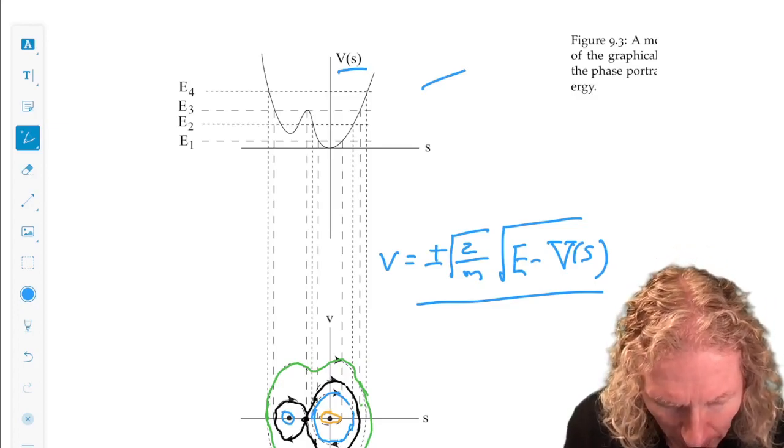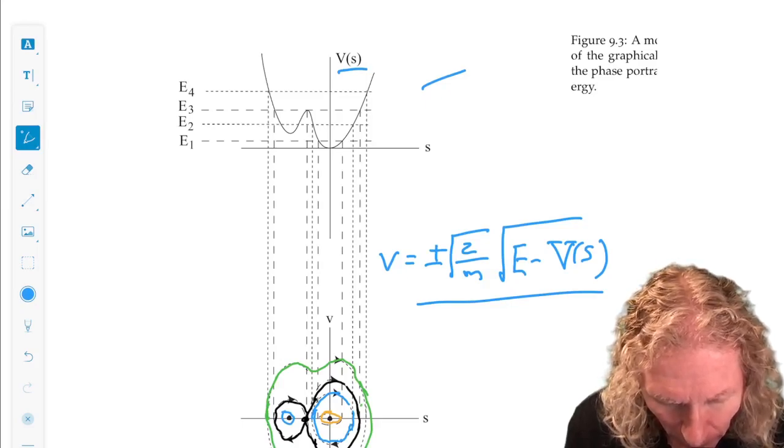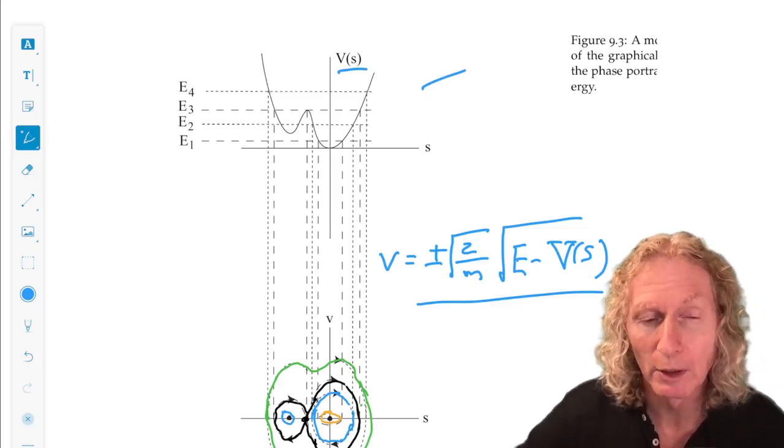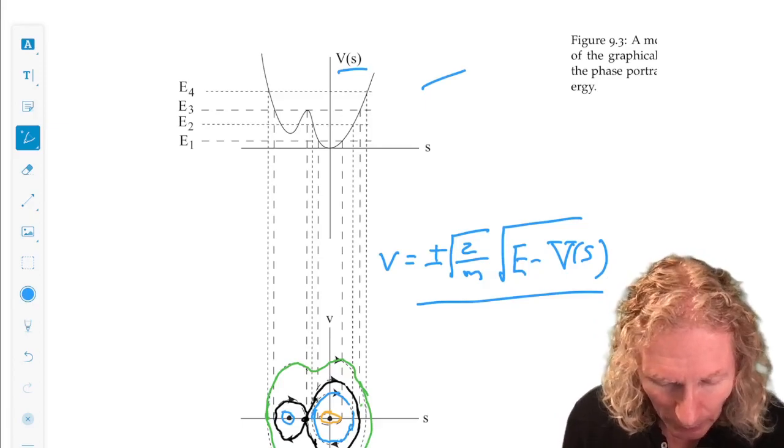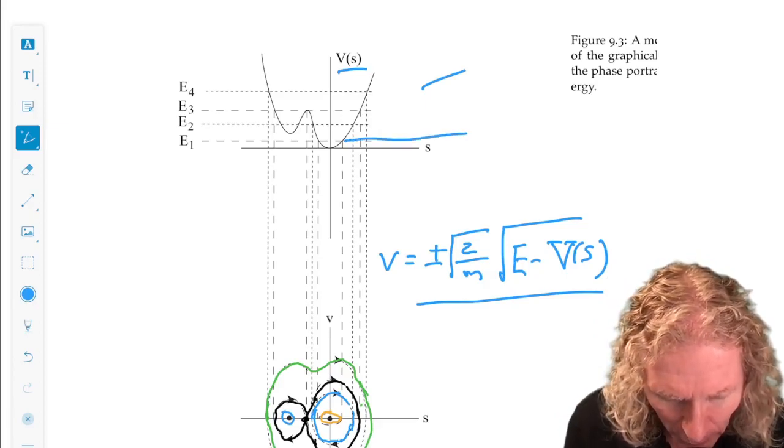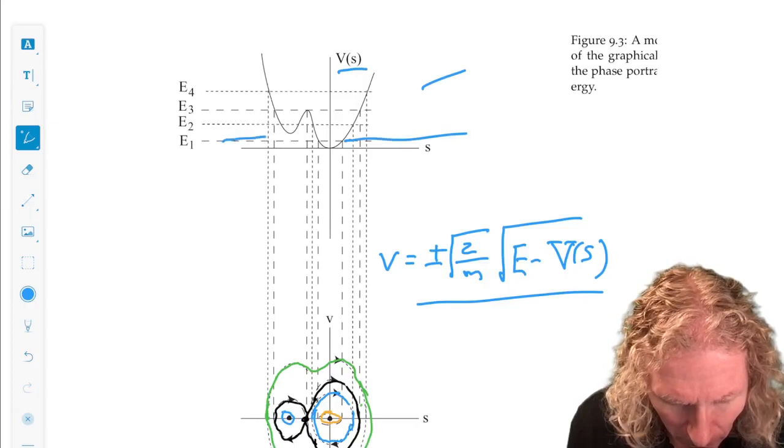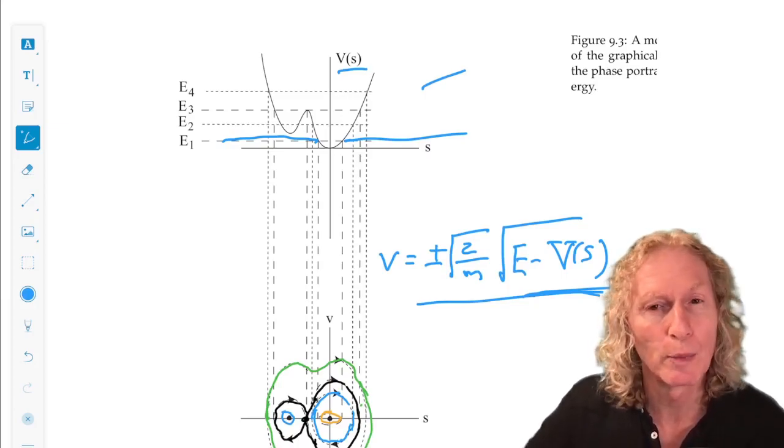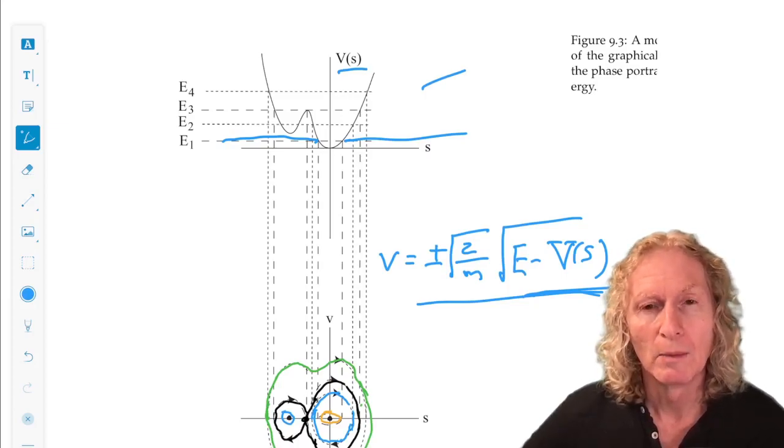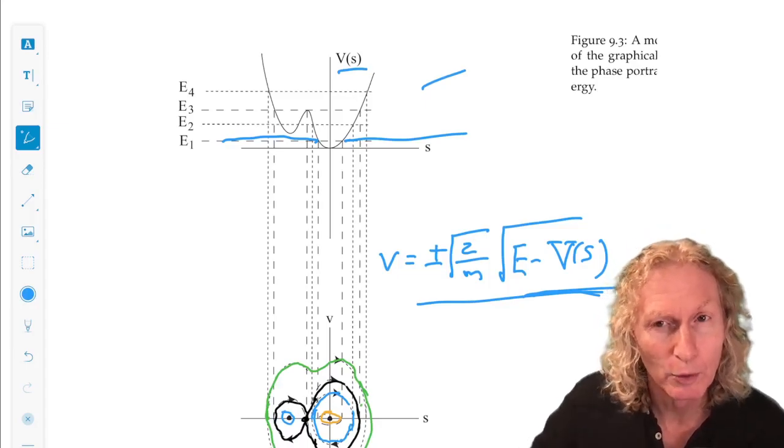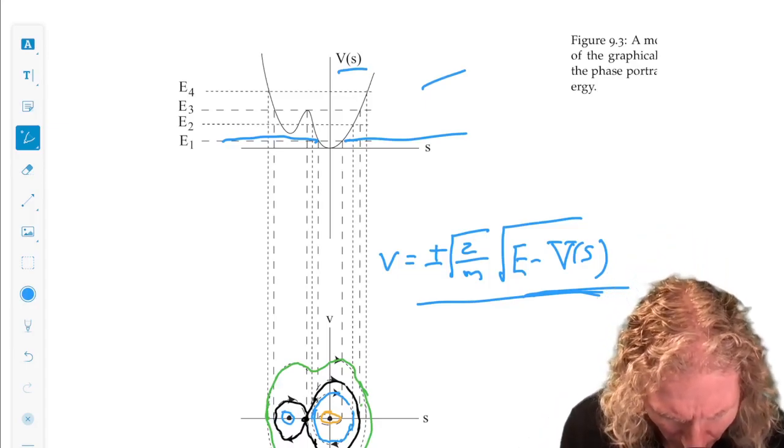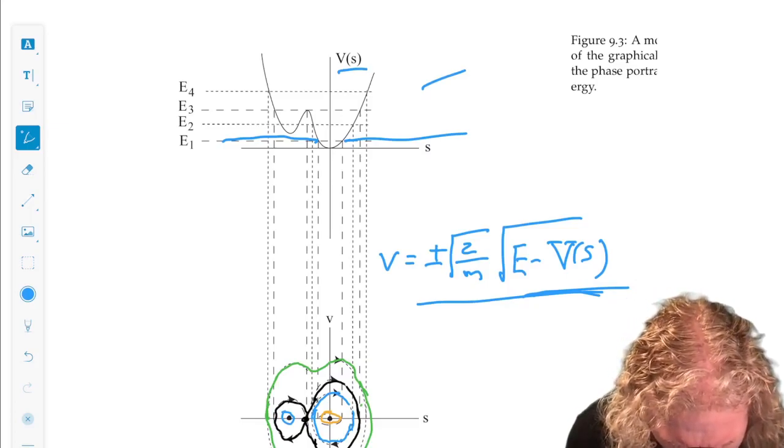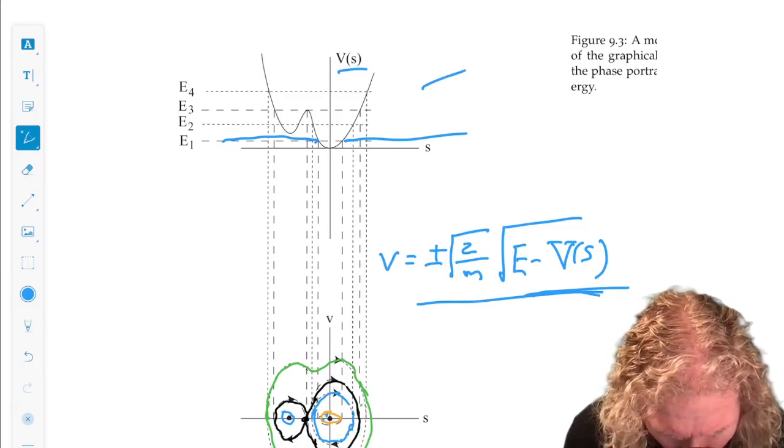So E1, that value intersects the potential in this region above the lowest local minimum. And it's important to realize that outside that region V of s is greater than E of s, so that's a forbidden region. And the level curve has no values for that value of energy.